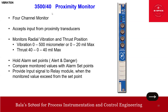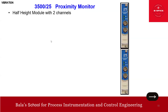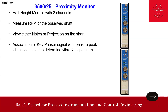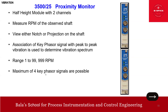Module 25 is the key phasor monitor — a half-height, two-channel module that measures RPM of the observed shaft using either a notch or projection on the shaft. It associates the key phasor signal with peak-to-peak vibration to determine the vibration spectrum. The range is 1 to 99,999 RPM, and a maximum of four key phasor signals are possible. It also provides buffered outputs.